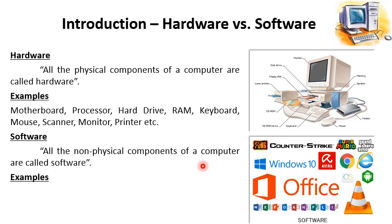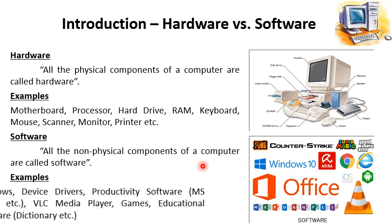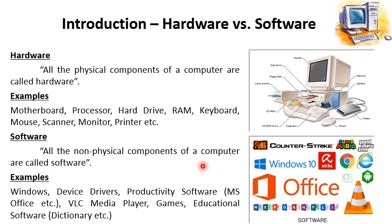There are also some examples of software, like Windows — we call it an operating system — device drivers, productivity software like MS Word or applications included in MS Office, media player, games, education software, and dictionaries. These different types fall into the category of software. We install all these programs or software in our computers so that they can be executed.